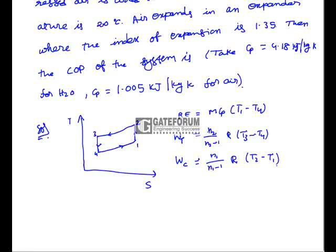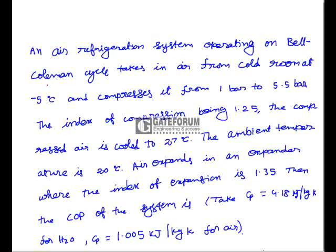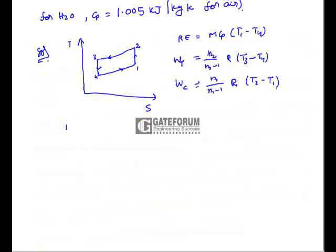The cycle takes in air from the cold room at minus 5 degrees centigrade, so T1 = −5°C = 268 K. The compressed air is cooled to 27 degrees centigrade after compression (process 2 to 3), so T3 = 27°C = 300 K. We still need to find T2 and T4.